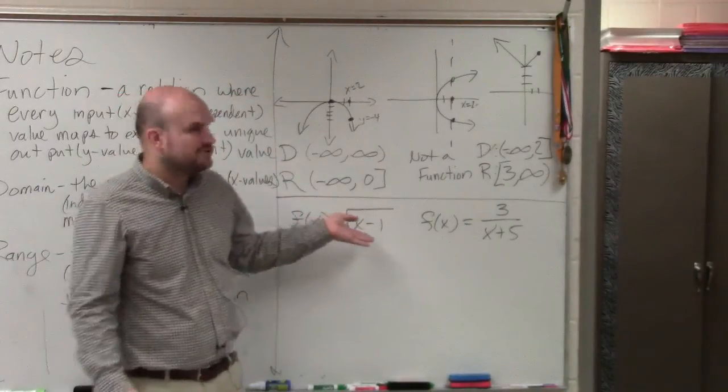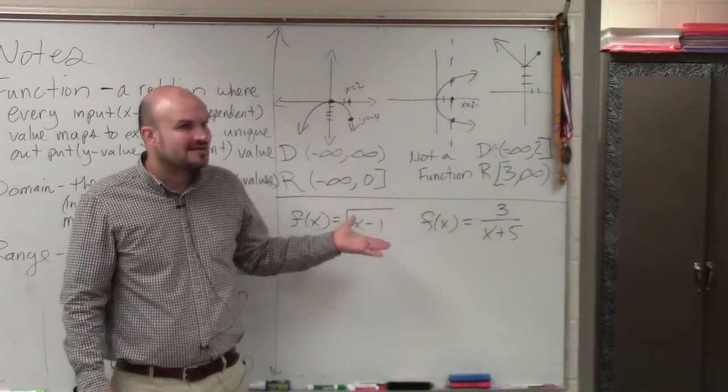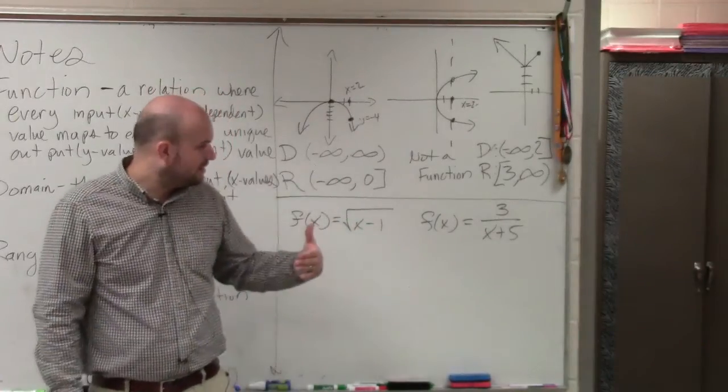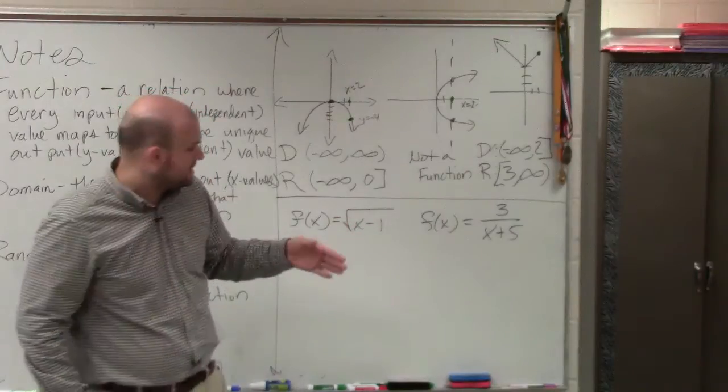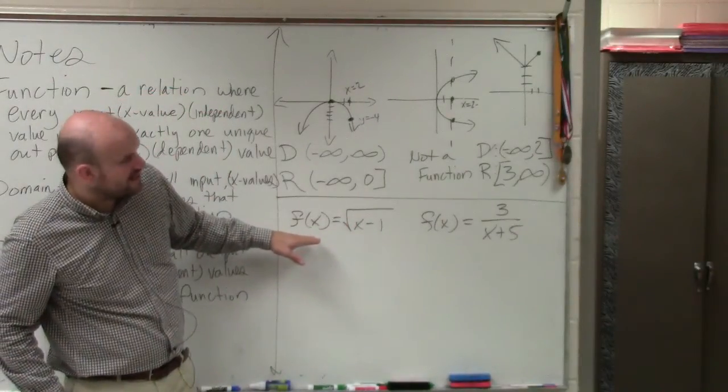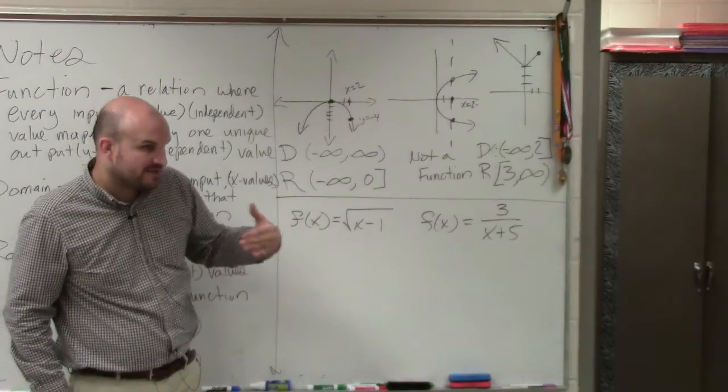But here, if you have no idea what the square root of x minus 1 looks like, to identify the domain range, you'd either have to graph it and then do it, or you'd have to understand what the graph automatically looks like. Now, if f of x equals square root of x minus 1, there's a couple of things that we need to understand.